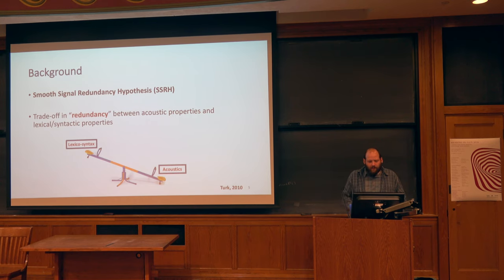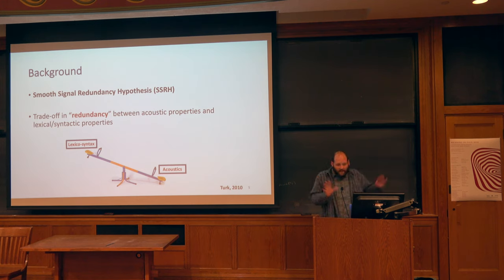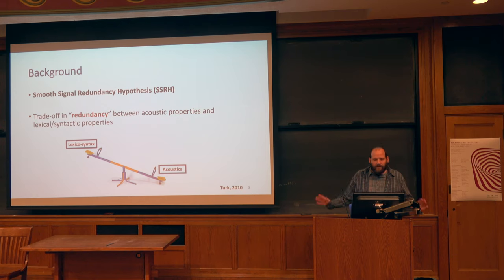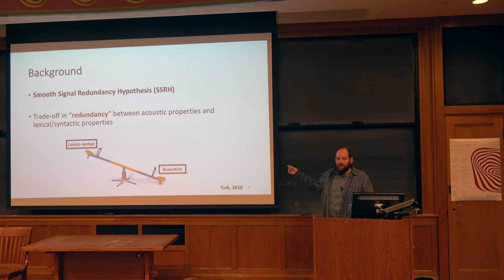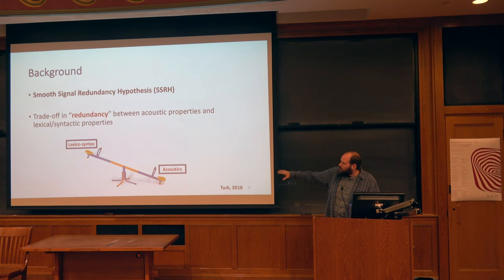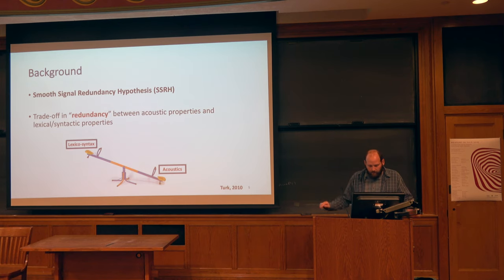In today's talk, which focuses on the relationship between distributional syntactic information and type of lexical items on the one hand, and acoustic properties on the other, we'll turn to a specific theory — or hypothesis, let's say — the smooth signal redundancy hypothesis, which has been proposed by Alice Turk. This is not the only thing that ties into this kind of theory, but it is the one which makes the most crisp correlations between acoustic properties and things that might come from the lexicon and from syntax.